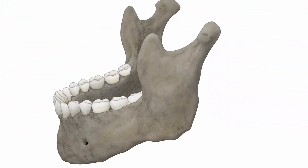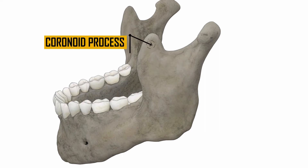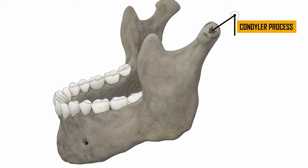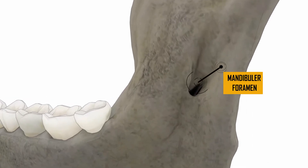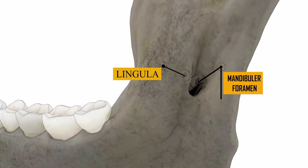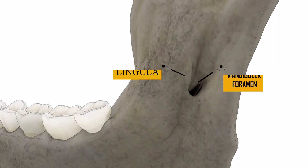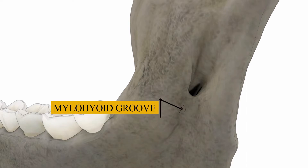The ramus of the mandible consists of the coronoid process anteriorly and the condylar process posteriorly, which consists of a head and neck and articulates with the temporal fossa forming the temporomandibular joint. Between the condyle and coronoid there is a notch called the mandibular notch. On the inner surface there is the mandibular foramen, which leads to the mandibular canal and ends at the mental foramen on the outer surface of the body. Above the mandibular foramen there is a slight ridge called the lingula. A faint groove on the inner surface of the ramus, starting from the mandibular foramen, is called the mylohyoid groove, which contains the mylohyoid nerve.